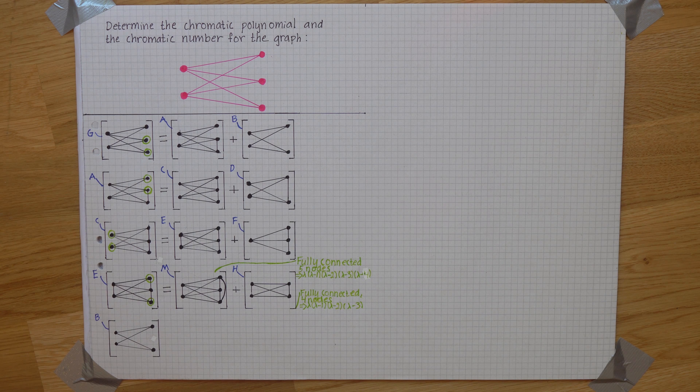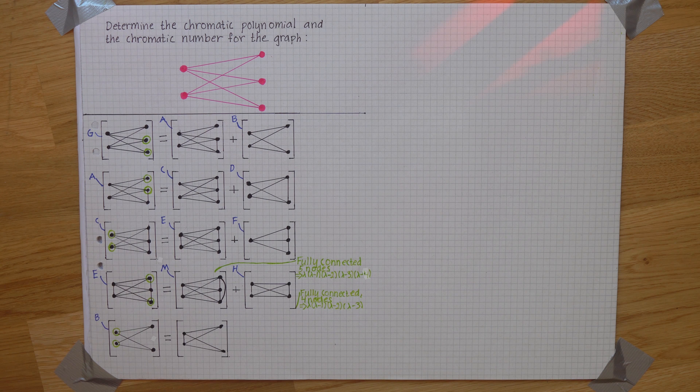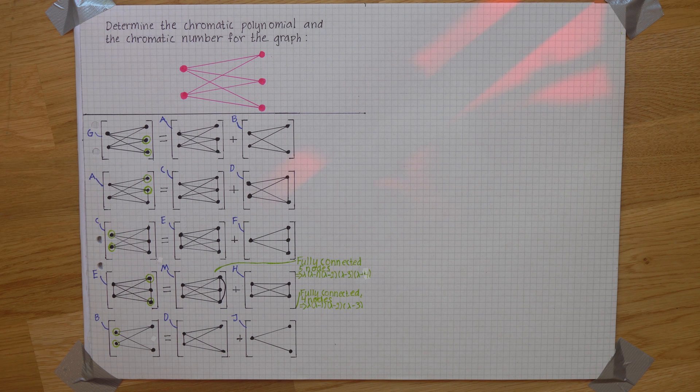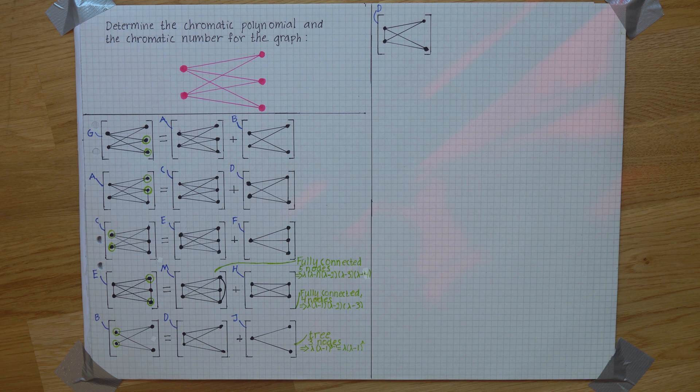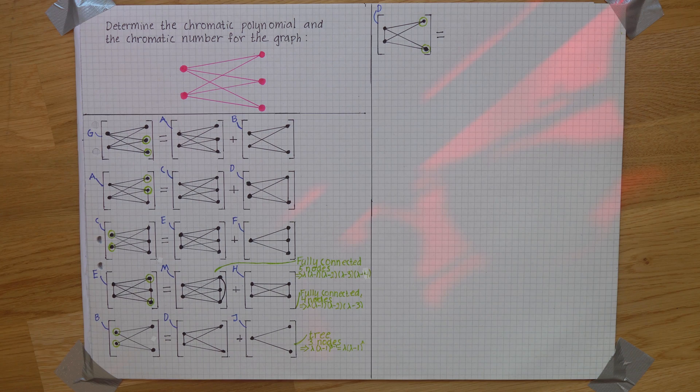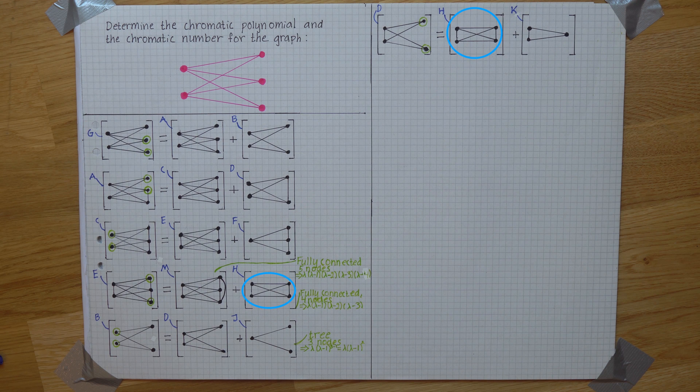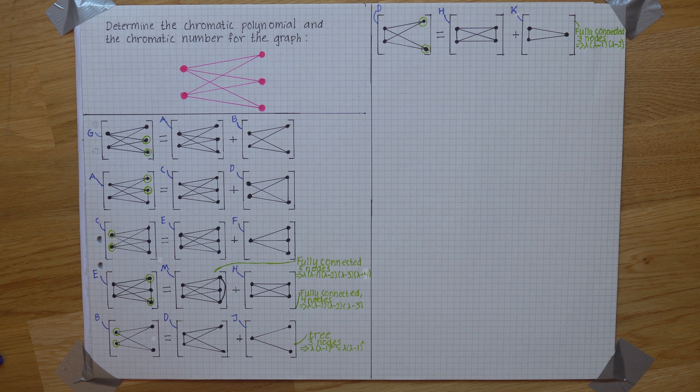If we move on to B connecting these nodes we get the graph D that we had up here plus the new graph J where J is a tree with three nodes giving us lambda times lambda minus one to the power of the number of nodes in the tree minus one. And if we add an edge to D here we get H that we've seen before. And no is fully connected with four nodes plus K that is fully connected with three nodes.